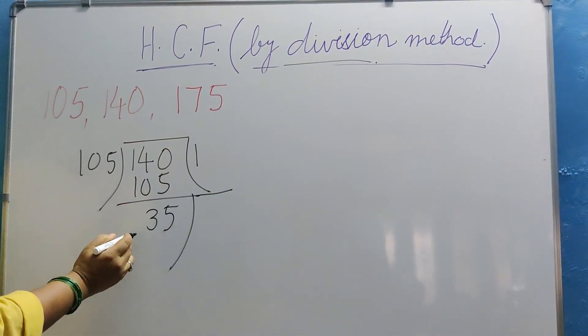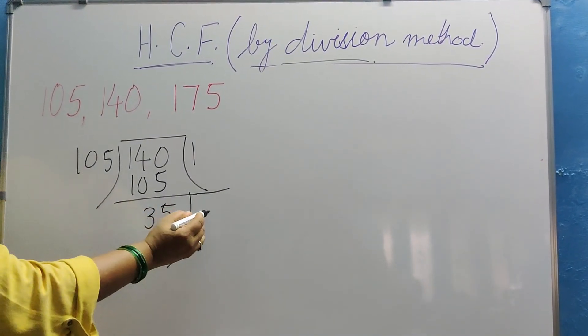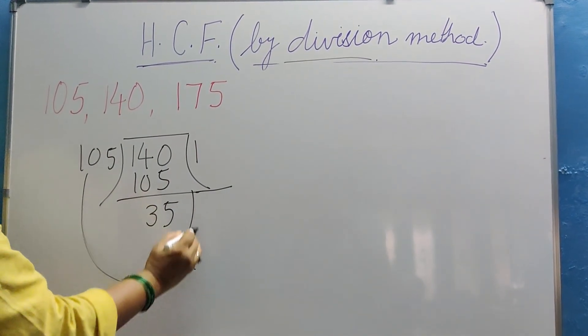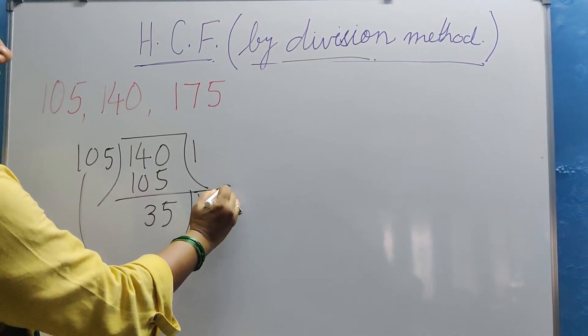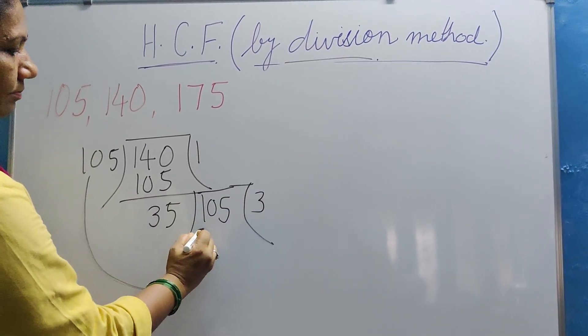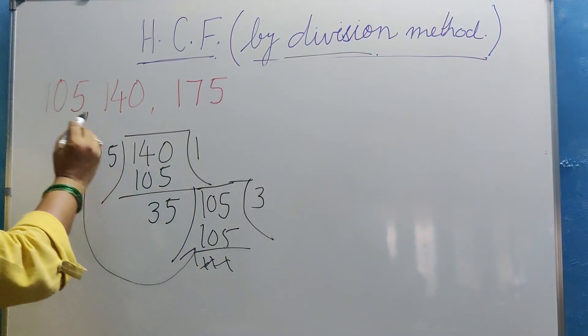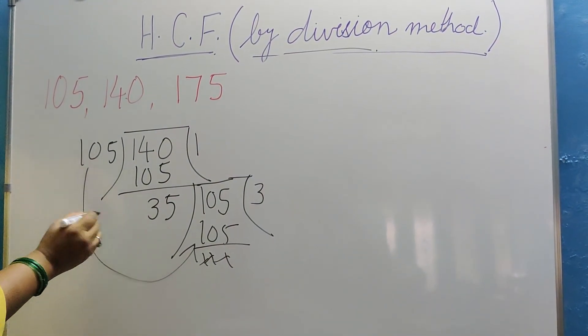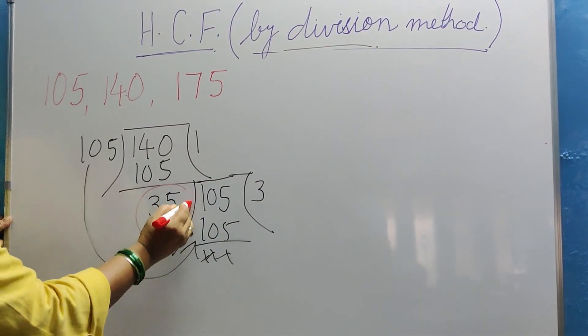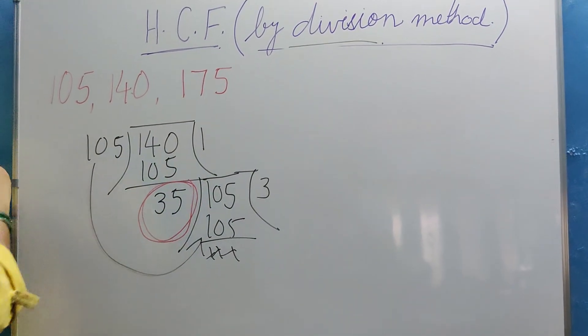Now this will become what? The divisor. And what will come inside here? This 105. Now how many times will it go? Three times. 1, 0, 5. Now if it had been only two numbers here, what is the HCF? The HCF is 35.